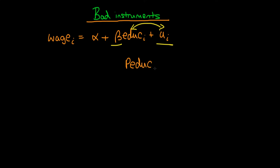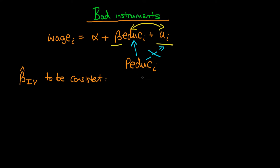The instrument I'm going to talk about is parental education — the number of years of education which either or both of your parents actually obtained. The idea is that parental education should affect an individual's level of education, but it should not be correlated with the error term. There are two conditions which must be upheld for beta hat IV to be consistent. The first condition is that the covariance in the population of parental education with the population error term must equal zero.